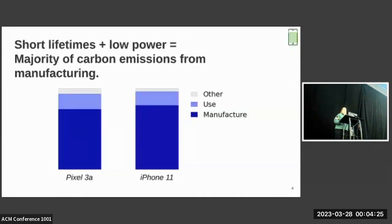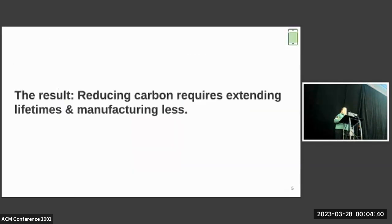As a direct consequence of these short lifespans, as well as the low operational power of a smartphone, the majority of carbon emissions associated with our smartphone use come not from use, but rather manufacturing, about 80% for Google, Apple, and other manufacturers. So if we care about reducing the carbon footprint of our smartphone use, we need to look at extending lifetimes and therefore eventually manufacturing less.